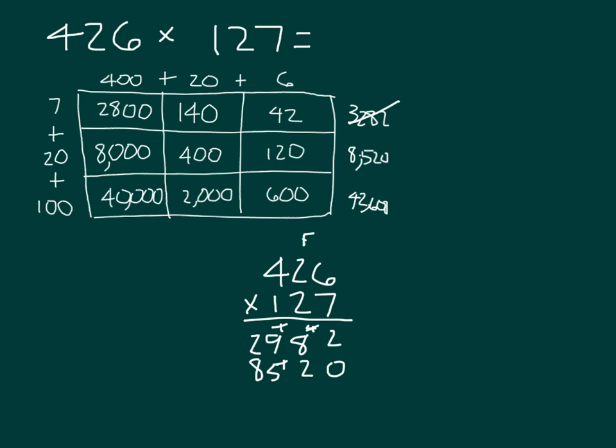And it looks like we actually added these incorrectly here. Apologies. 2,800 plus 140 plus 42 is actually 2,982. I did have those multiplied correctly. However, when I went to add them, I added them incorrectly.